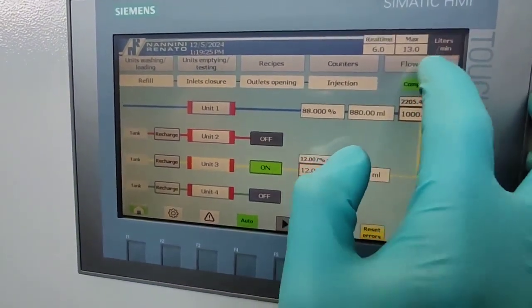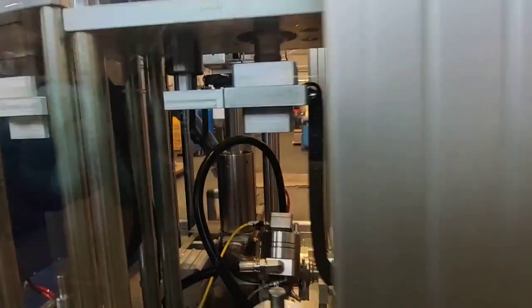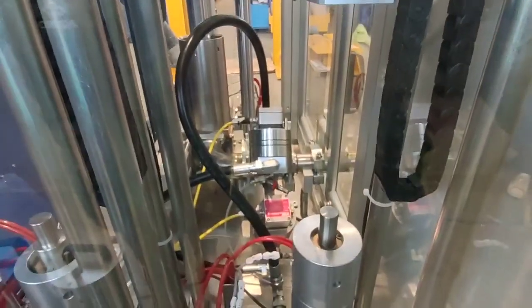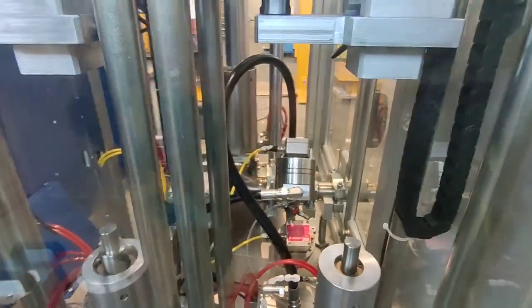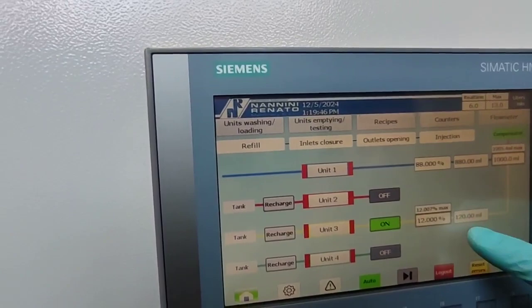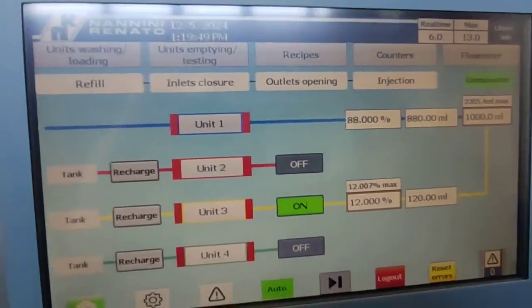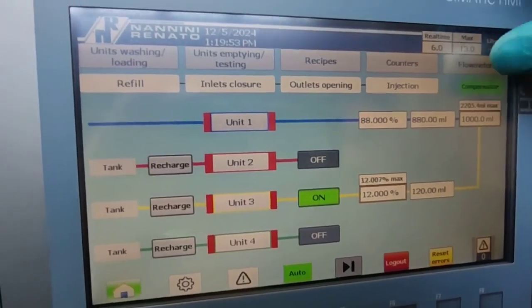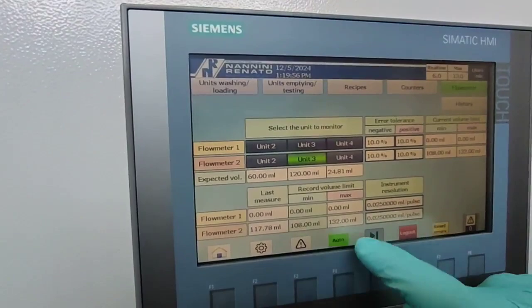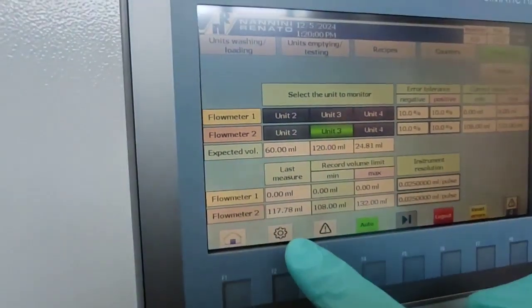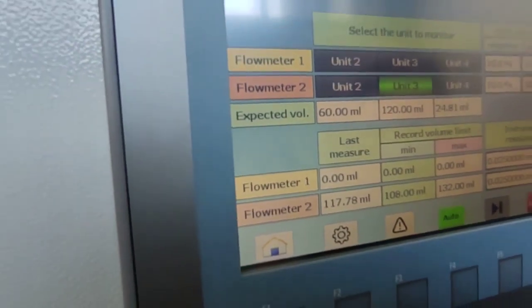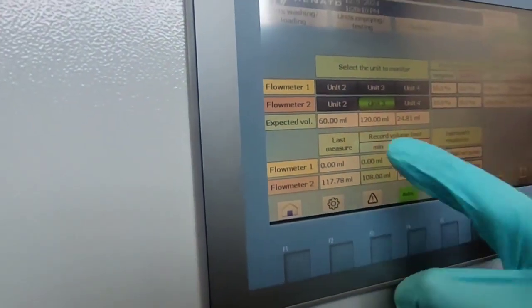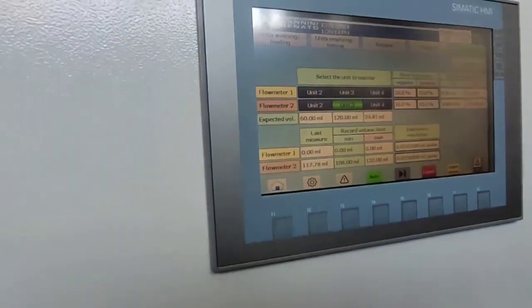I can show you here that you have two flow meters checking out if the additive product flowing out from the dosing unit is actually the same as you have set on the HMI display. And now we are going to dose out 120 ml. So the flow meter checks if actually the product coming out is 120. We have a little tolerance of 10% here and it has just measured 117.78 ml coming out, which is very close to 120 ml set by the system.